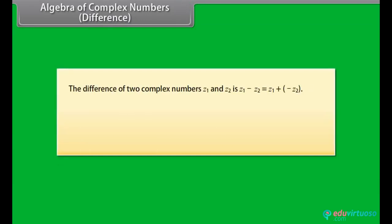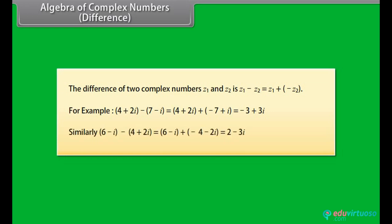Algebra of complex numbers — Difference. The difference of two complex numbers Z1 and Z2 is Z1 minus Z2, equal to Z1 plus (minus Z2). For example, (4 plus 2 iota) minus (7 minus iota) equals (4 plus 2 iota) plus (minus 7 plus iota) equals minus 3 plus 3 iota. Similarly, (6 minus iota) minus (4 plus 2 iota) equals (6 minus iota) plus (minus 4 minus 2 iota) equals 2 minus 3 iota.